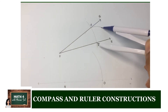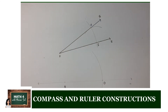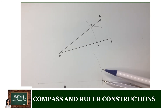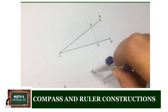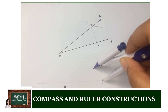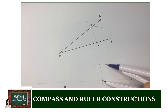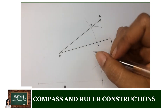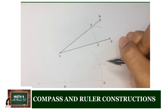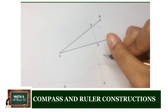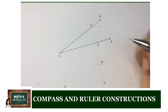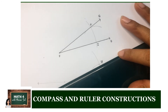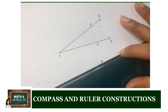Back on your working line, draw an arc with center at O that will intersect the first arc. Call their point of intersection point U. Next, draw ray NU. This angle UNO is the duplicate of angle EFG.